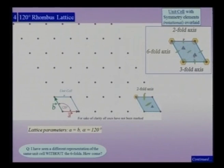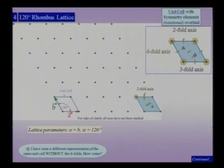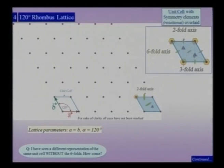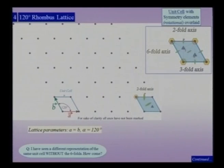Looking at the figure on the right-hand side more carefully, all rotational symmetry operators have been overlaid onto the unit cell. There are 6-folds at each vertex of the unit cell; inside the unit cell at the centroids of the triangles are two 3-fold axes; at every edge center there is a 2-fold axis; and additionally along the diagonal center there is a 2-fold axis.